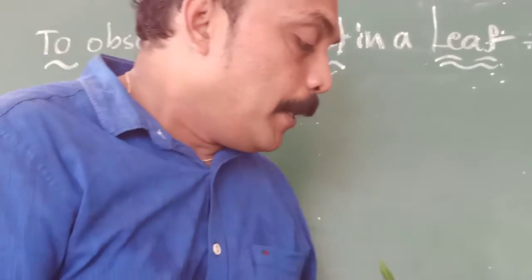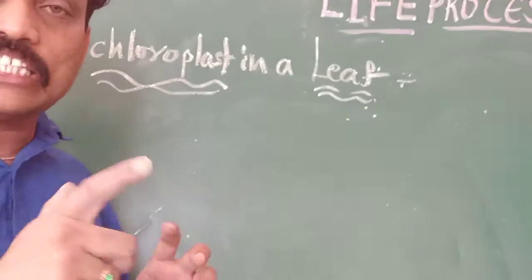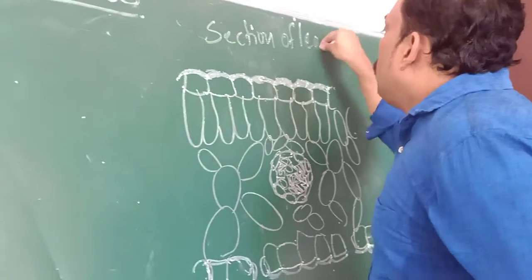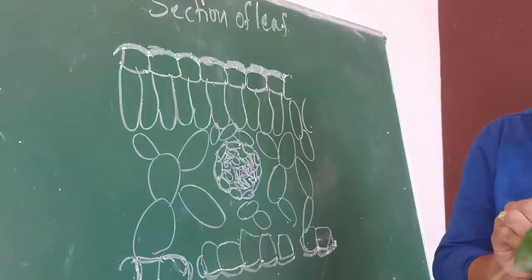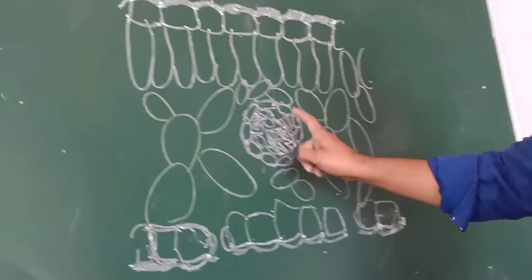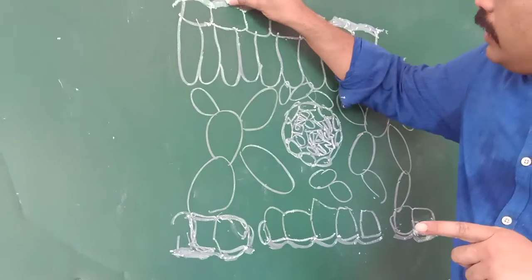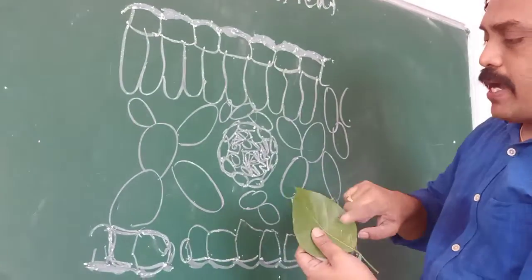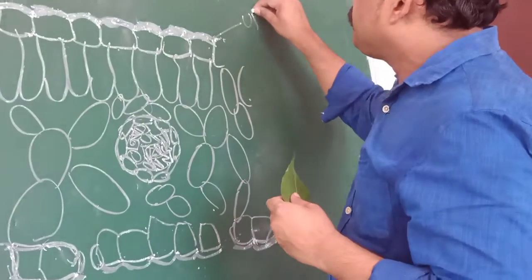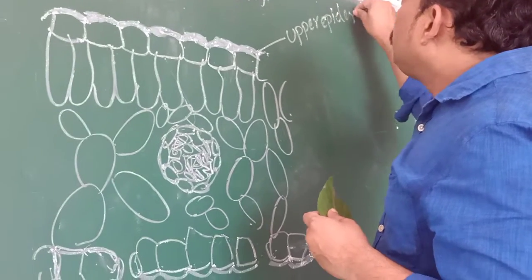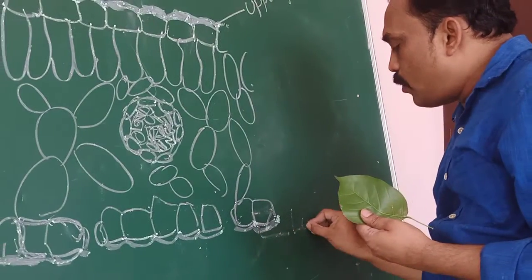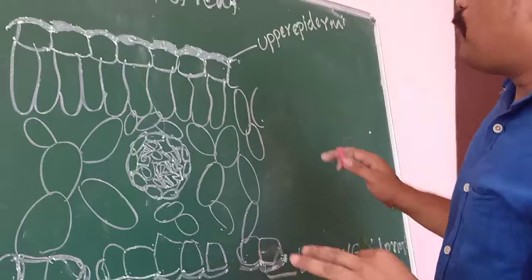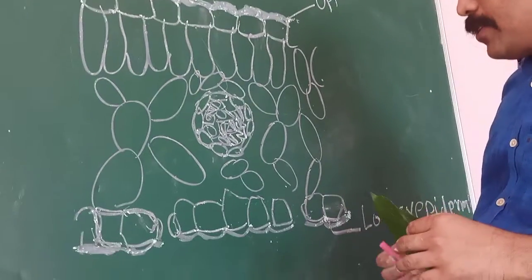Now, if you observe the leaf peel — especially a section of leaf — if you take a small part of the leaf, cut it into a small piece, and keep it under the microscope, we will observe this type of structure. In this section, the front side is the upper region and the back side is the lower region. So the upper region has the upper epidermis and the lower region has the lower epidermis.